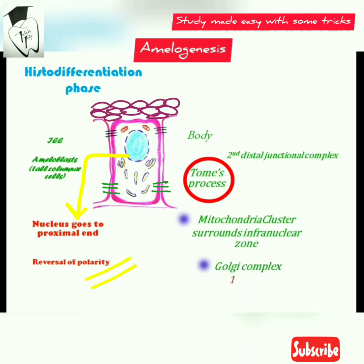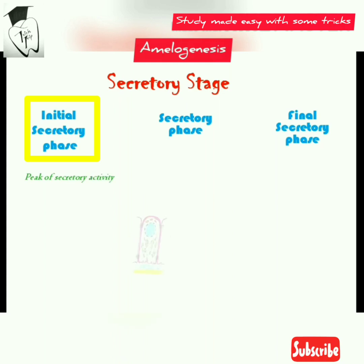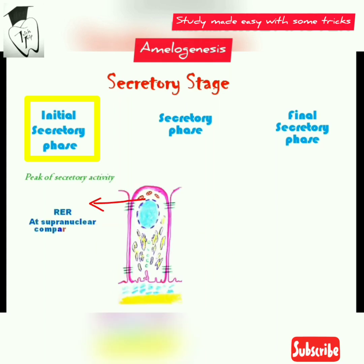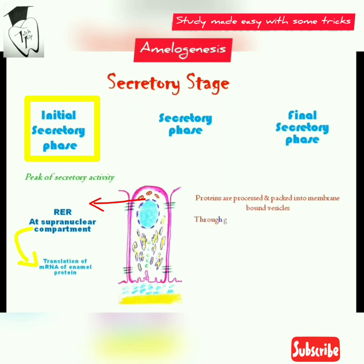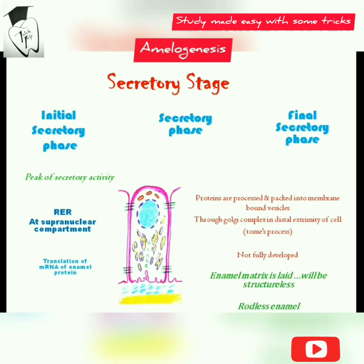Golgi complexes increase in volume and shift distally. In the initial secretory phase, ameloblasts are at their peak of secretory activity. Rough endoplasmic reticulum is present above the nucleus and is available for translation of mRNA of enamel proteins. The proteins are processed and packed into membrane-bound vesicles through the Golgi complex in the distal extremity — Tomes' process. Since Tomes' process is not fully developed, the enamel matrix laid here is structureless, called rodless enamel.